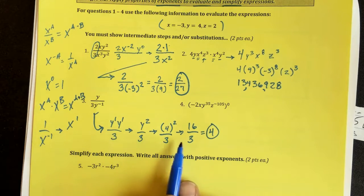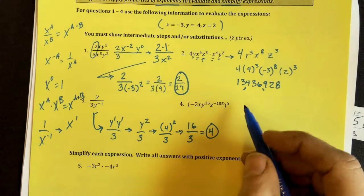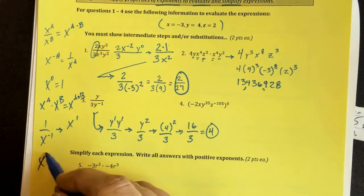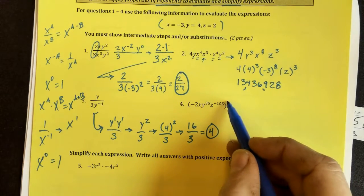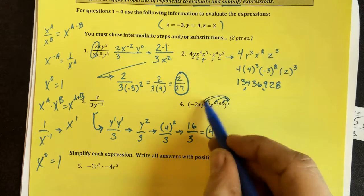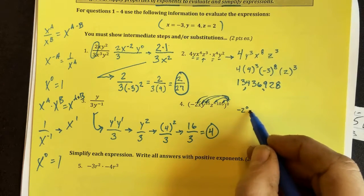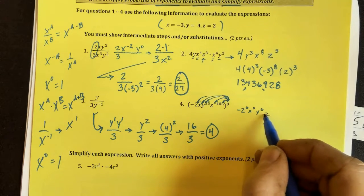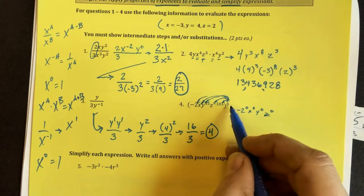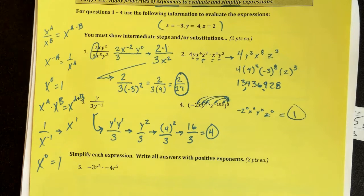You have to be able to show all this work to get the full credit for this question. Now here, we're about to use this rule. Anything to the 0 power is 1. So distribute 0 to each of these items. You have negative 2 to the 0, x to the 0, y, 35 times 0 is 0, z to the 0, because negative 105 times 0 is 0. Everything to the 0 power is equal to 1.